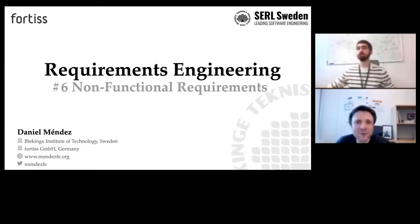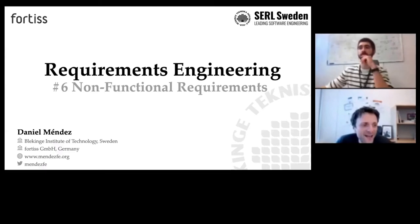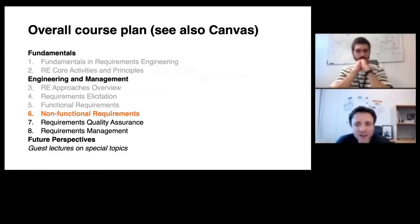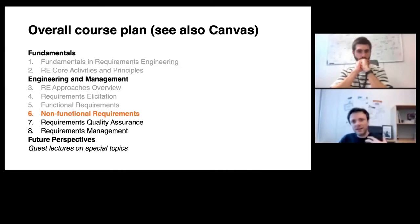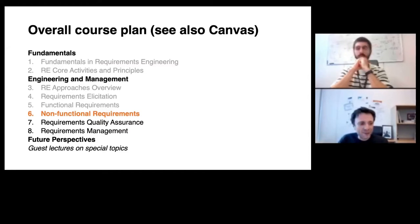Let's start. Welcome everyone to the sixth lecture on requirements engineering, today covering the topic of non-functional requirements. With this topic, we will be closing the chapter on more engineering-centric topics on the elicitation, refinement, and specification of requirements of different classes, before then concluding with more management-centric topics covering quality assurance and requirements management.